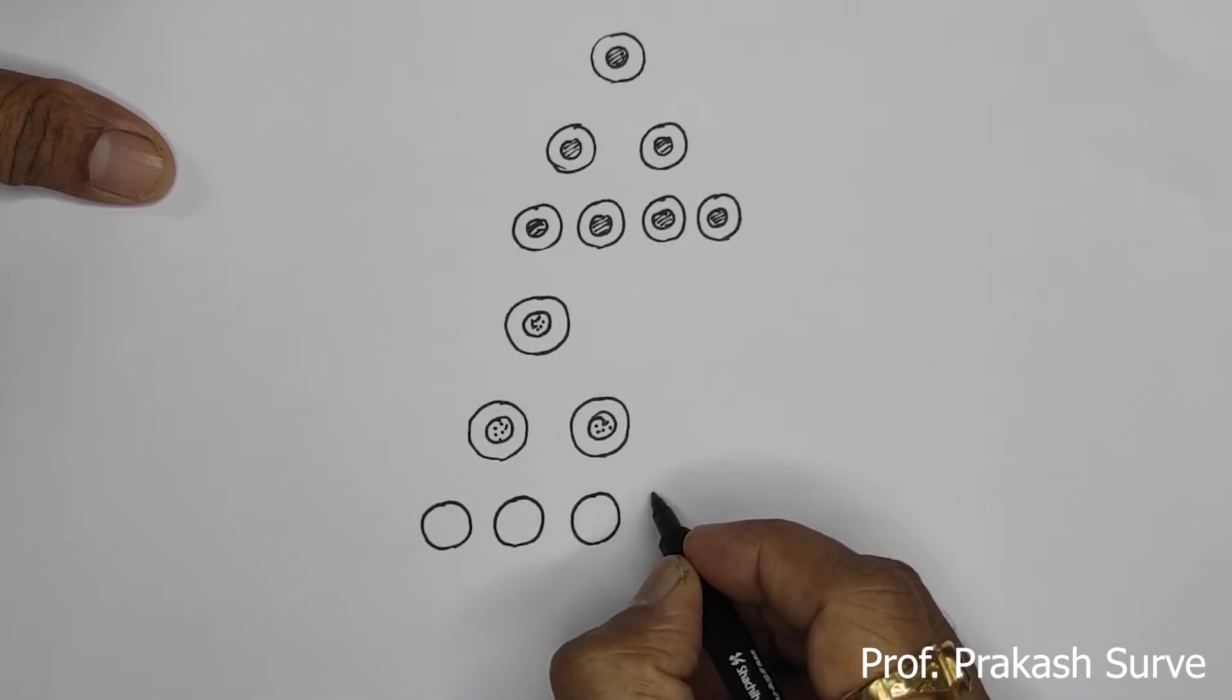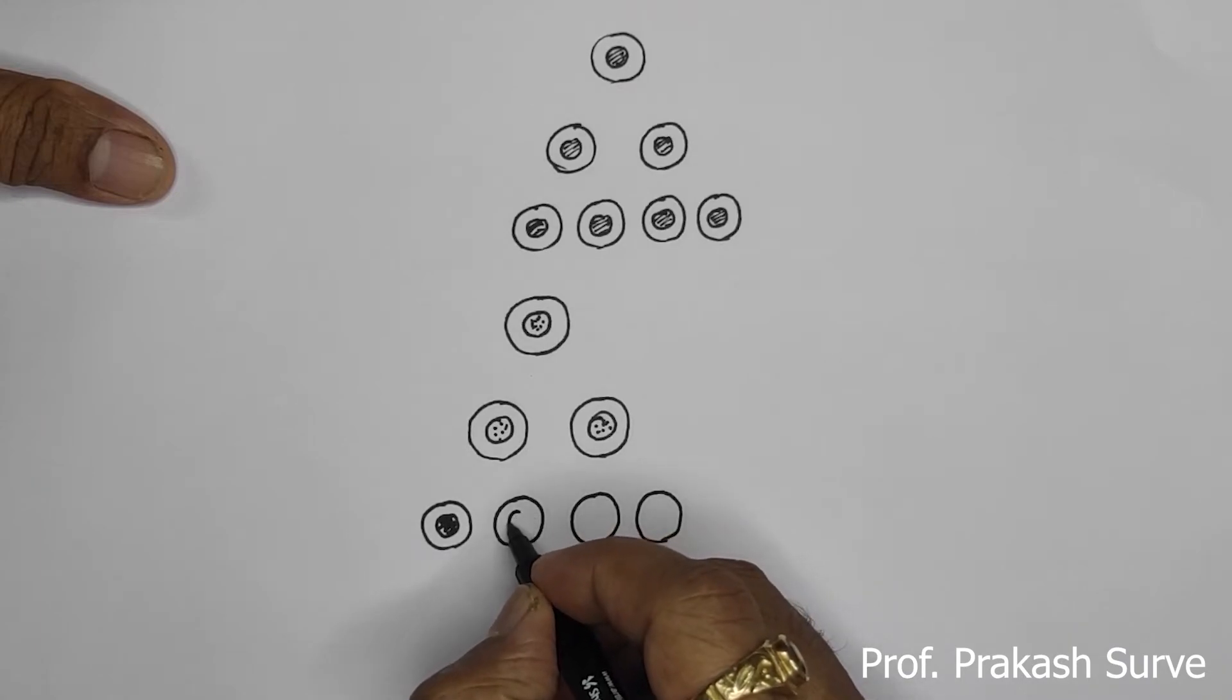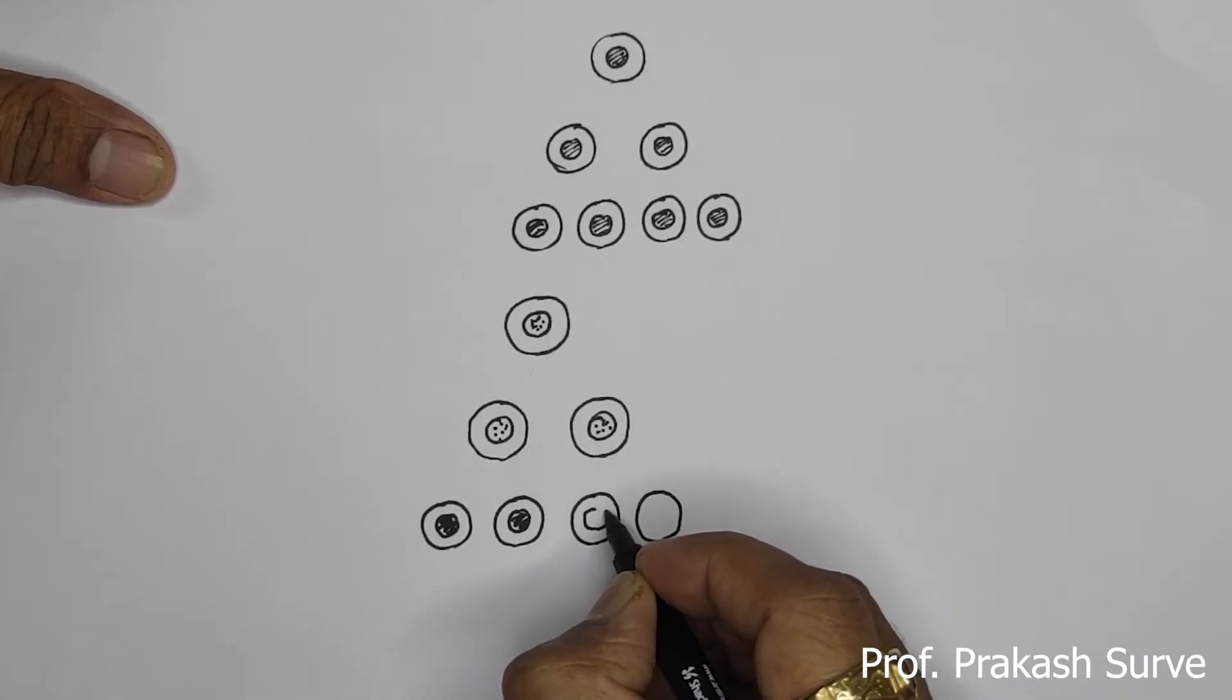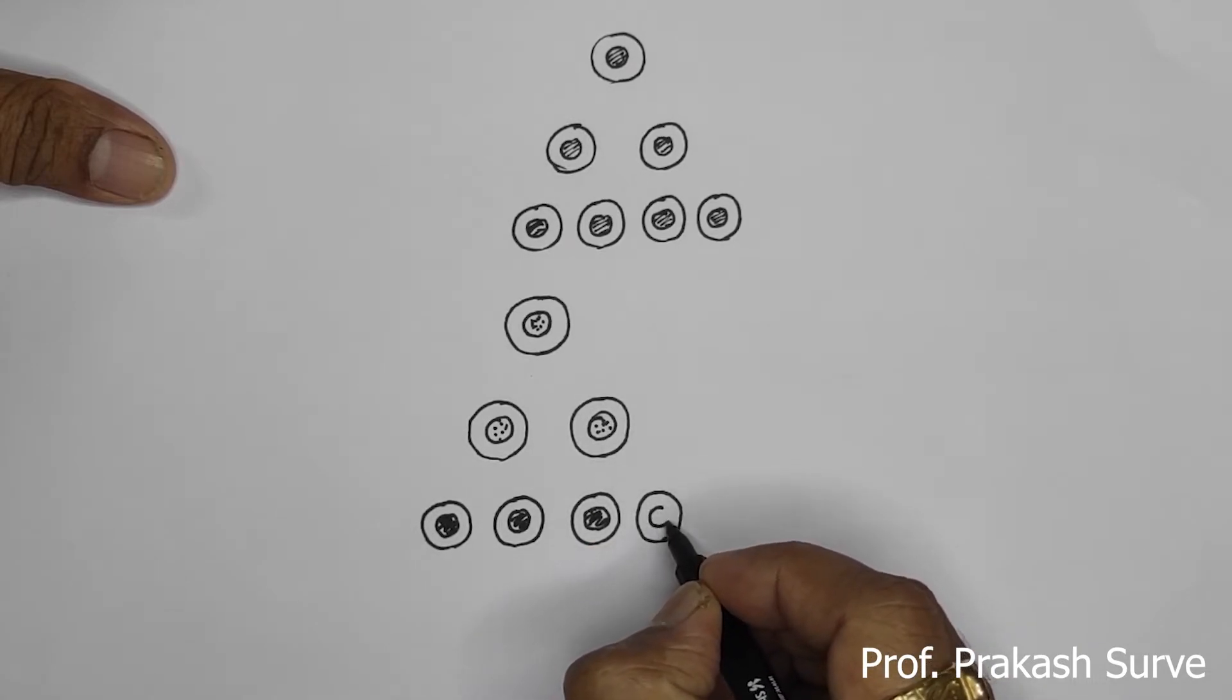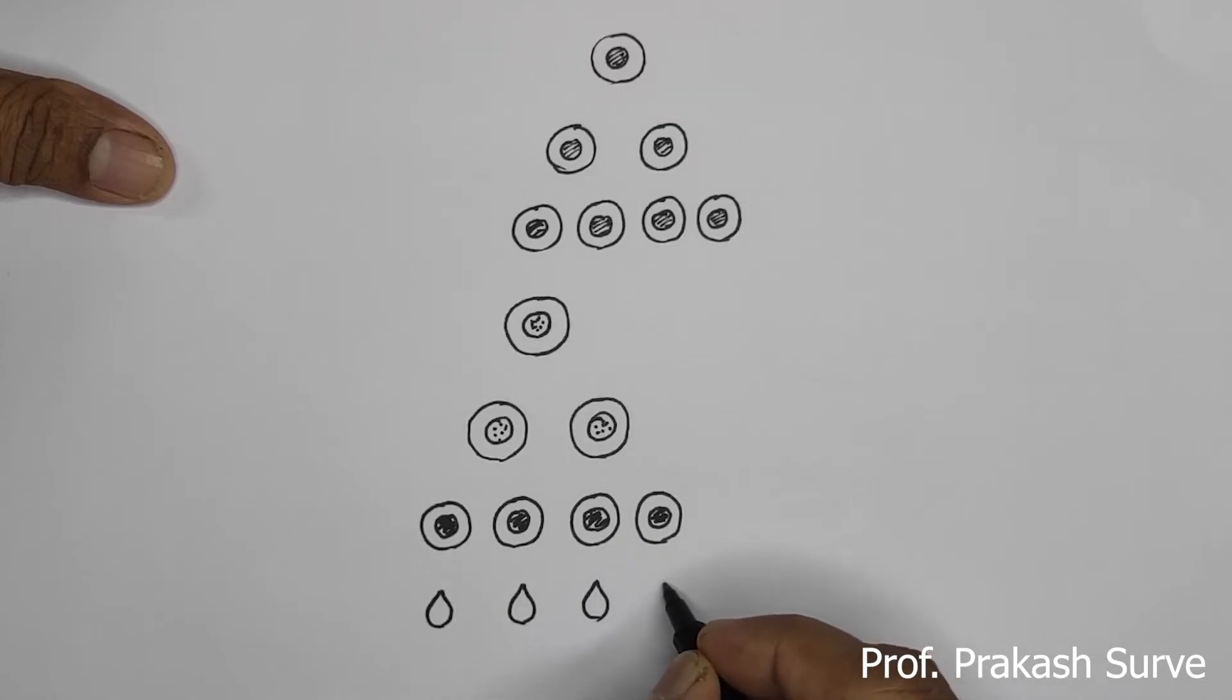From each we get two. These are the haploid spermatocytes. From this, here we will get the spermatozoa. From each we'll get the spermatozoa. So we'll make the shape like that. This is the head of the spermatozoa. Now this one is the neck region. Now we'll make the tail region.